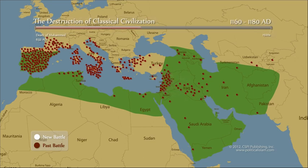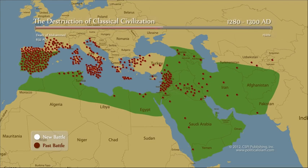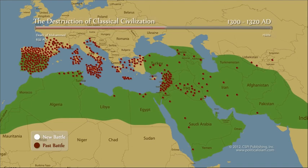You will notice that it is relentless — it is ceaseless, it goes on and on and on. Why is this? Because all of this was an imitation of Muhammad, the supreme warrior. He averaged an event of battle every six weeks for the last nine years of his life. He was relentless, and the jihad was relentless.